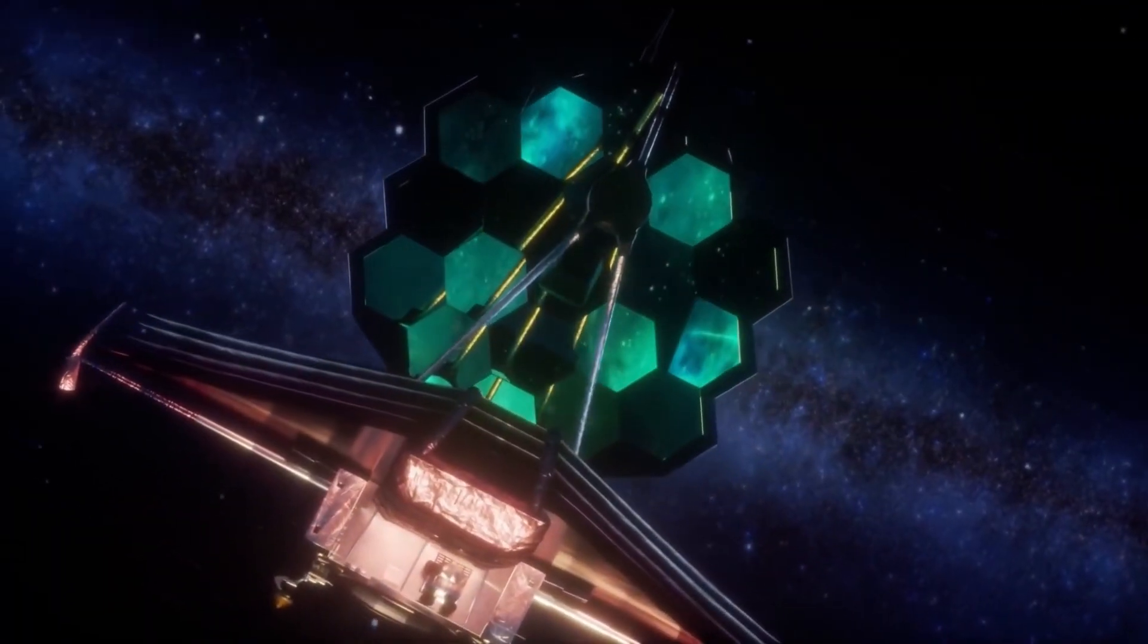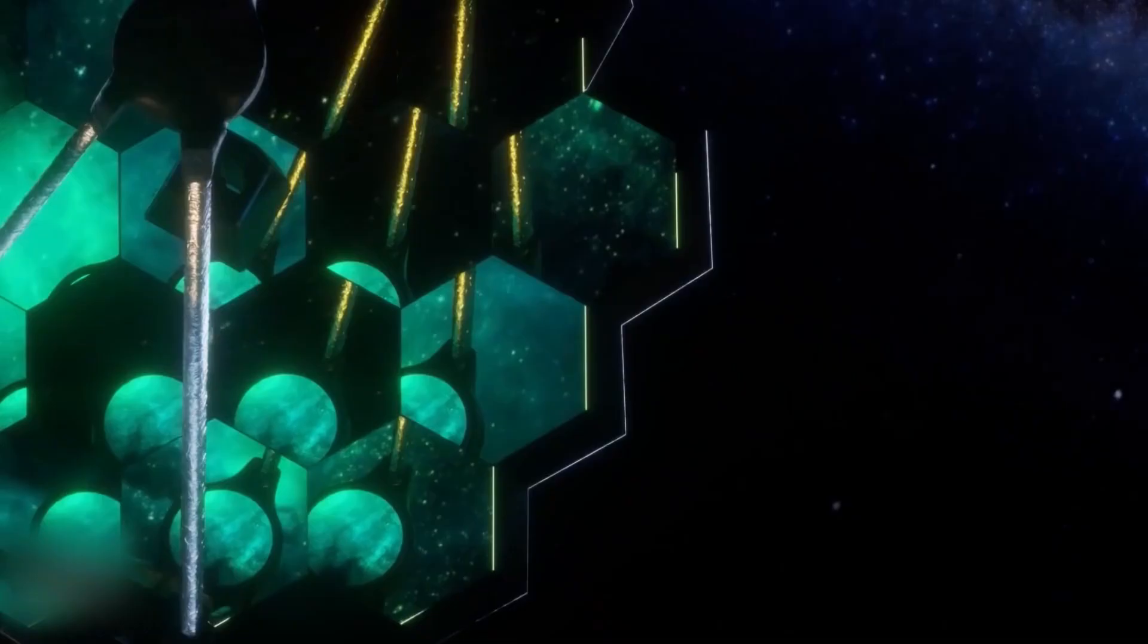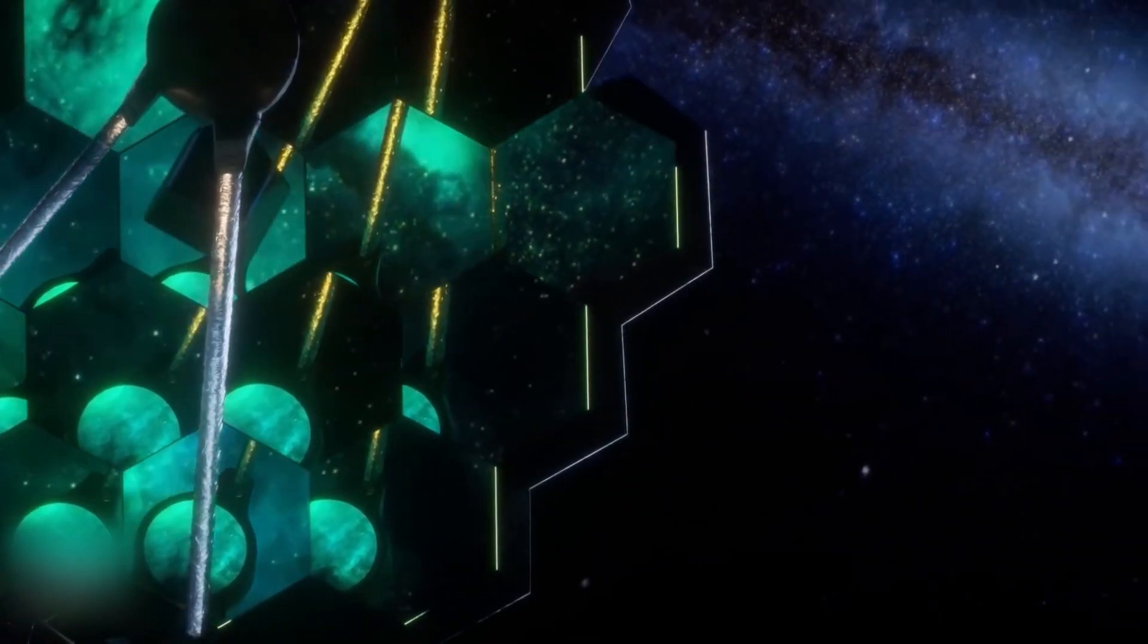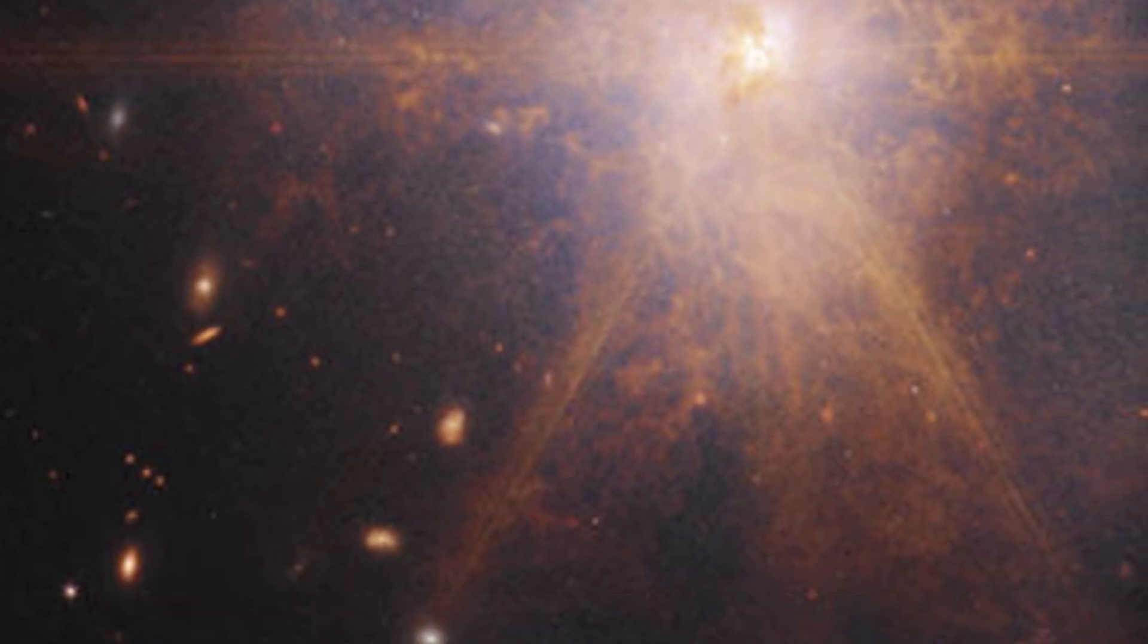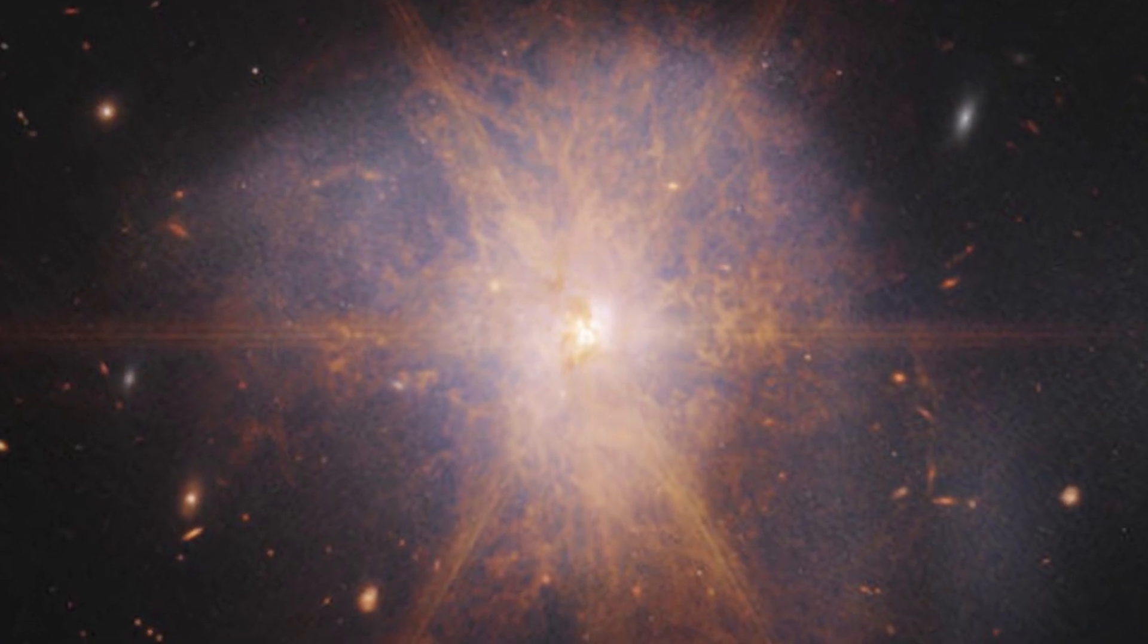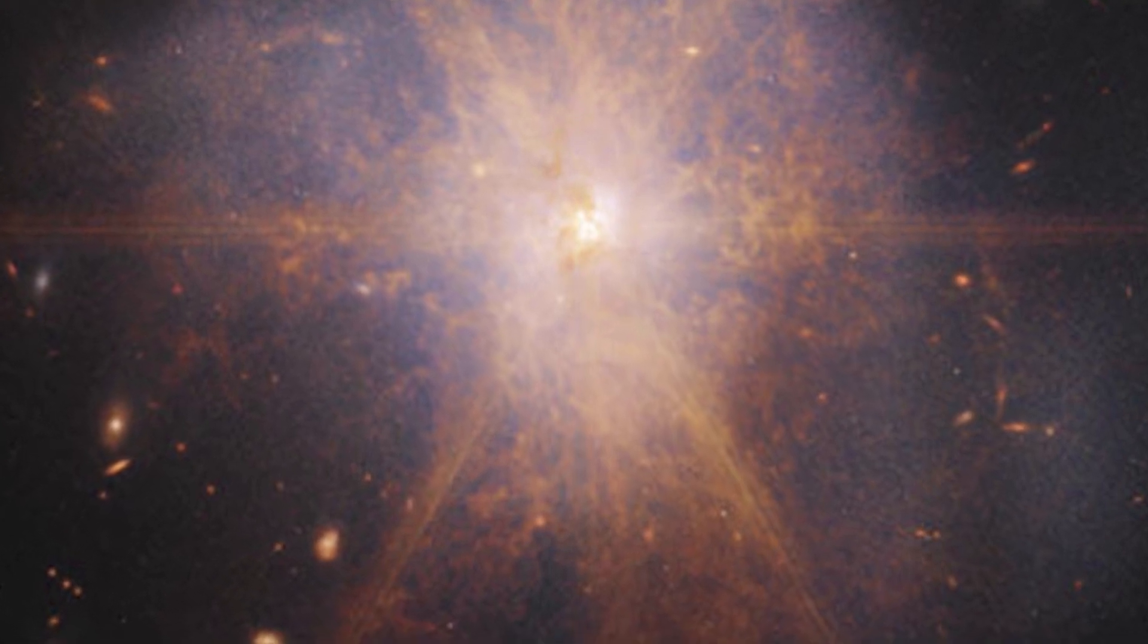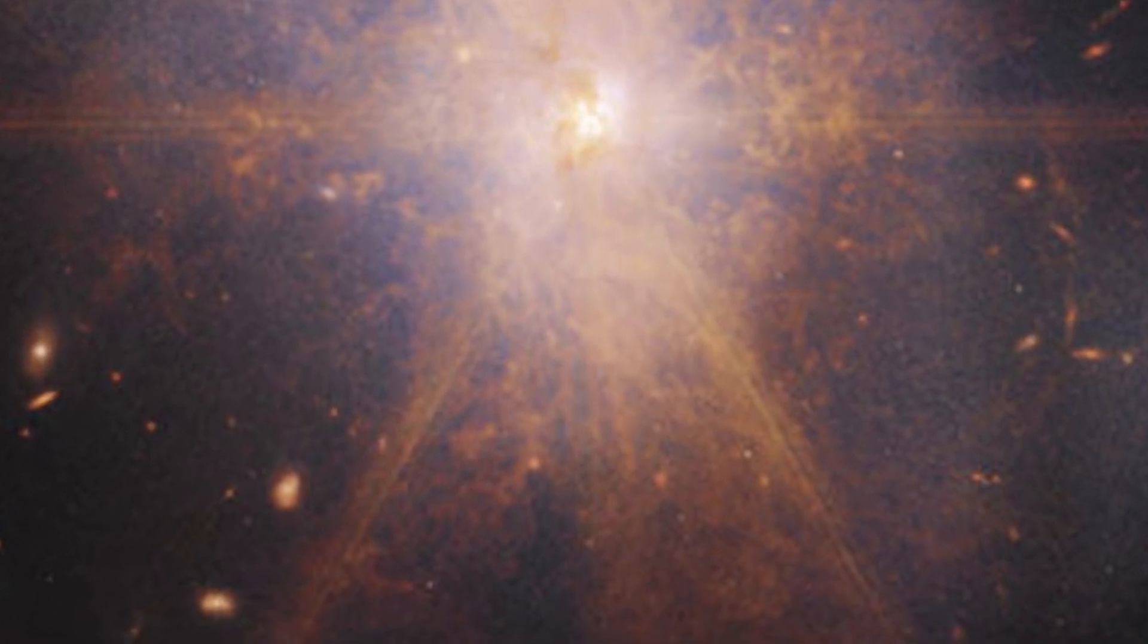This latest view from the James Webb Space Telescope shows an impressive galactic merger of the two galaxies. This image also shows faint tidal tails extending from the outskirts of the merger, indicating the gravitational pull between the two galaxies. Finally, the reddish and orange streams and filaments represent scattered organic materials in ARP-220.